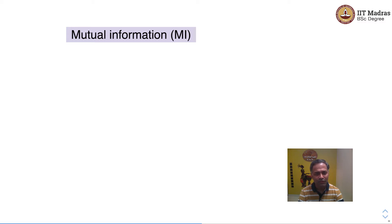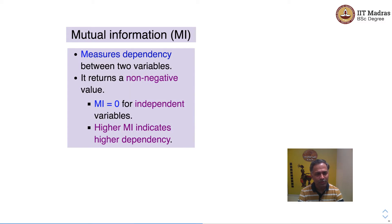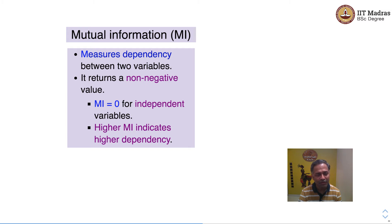Let's look at what mutual information is. Mutual information is a concept from information theory — it measures dependency between two variables. It returns a non-negative value representing the dependency. If mutual information is zero, the two variables are independent of each other. A high mutual information score indicates higher dependency between two variables.